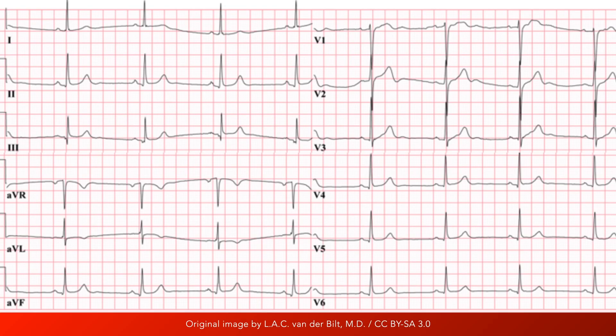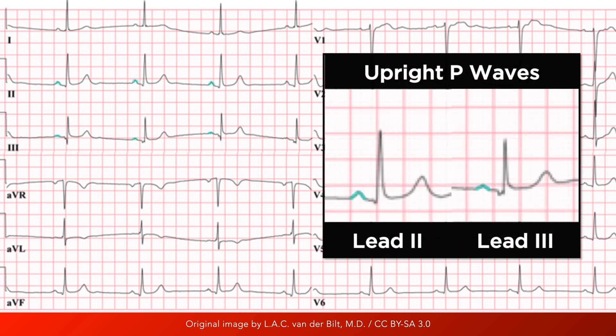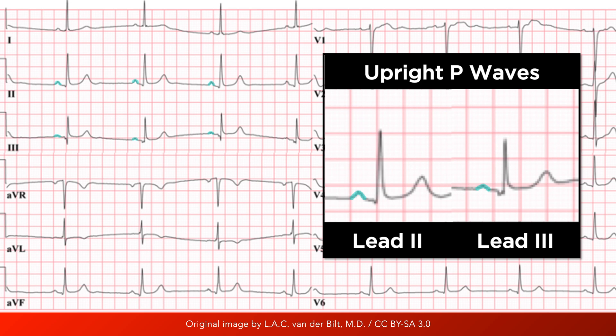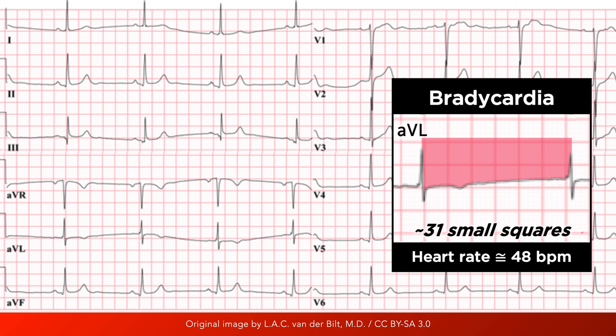The ECG characteristics of sinus bradycardia are essentially the same as sinus rhythm but at a slower heart rate. An upright P wave of constant morphology precedes every QRS complex, and a QRS complex follows every single P wave. The heart rate in a patient with sinus bradycardia is less than 60 beats per minute, which correlates with an RR interval of greater than one second. Finally, the rhythm is regular — that is, the RR intervals remain constant.